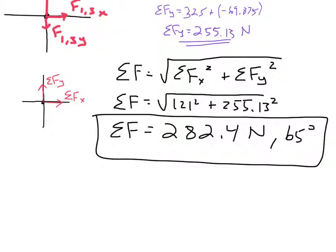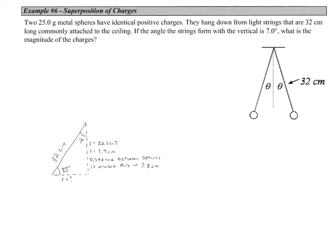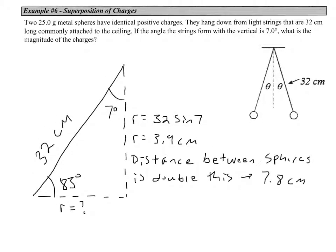We've got one final example. In this example, we have two 25-gram metal spheres with identical positive charges hanging from a light string that is 32 centimeters long, attached to the ceiling. If the angle the strings form with the vertical is 7 degrees, what is the magnitude of the charges? The first thing to do is look at the geometry.